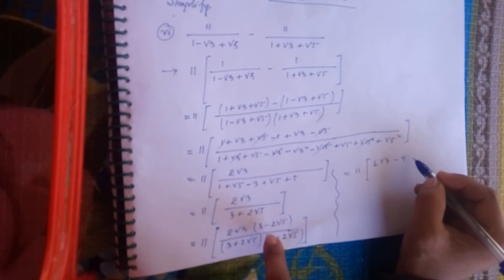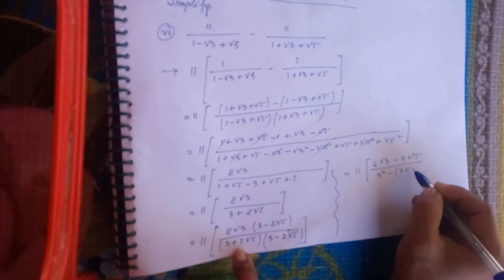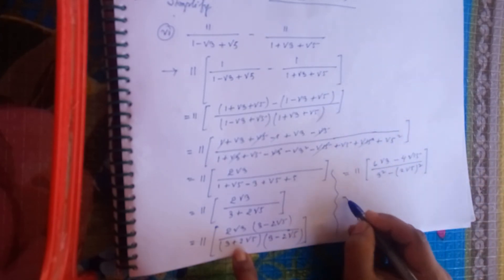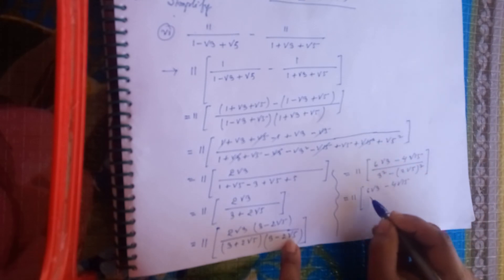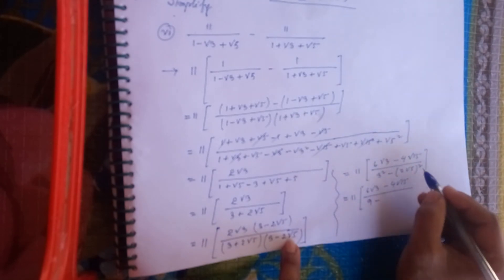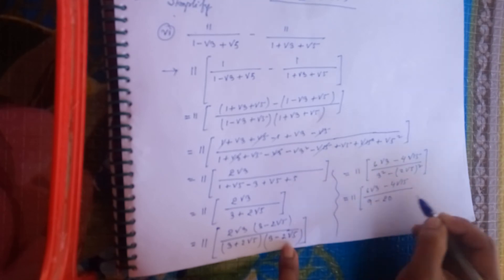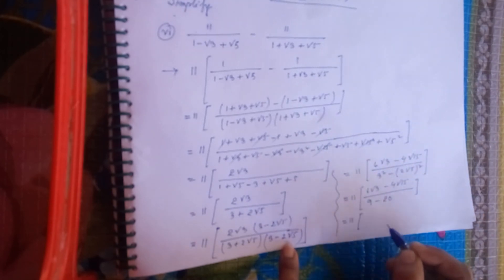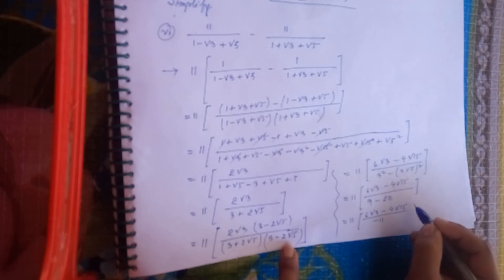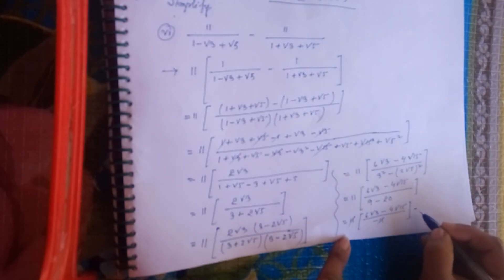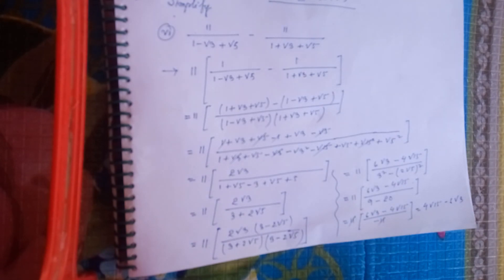This gives us 6 root 3 minus 4 root 15, by the denominator (root 3 squared minus 2 root 5 whole squared), which is 9 minus 20, equal to minus 11. So we get 6 root 3 minus 4 root 15 divided by minus 11, which simplifies to 4 root 15 minus 6 root 3.